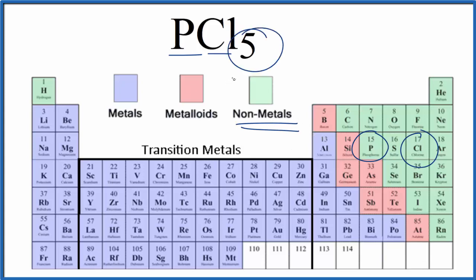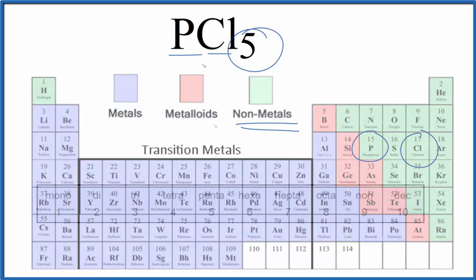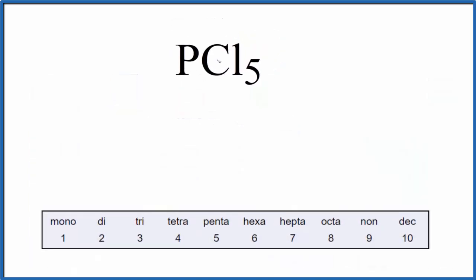And we have to use prefixes when we write the name for PCl₅. So first, let's write the name phosphorus as it's found on the periodic table.